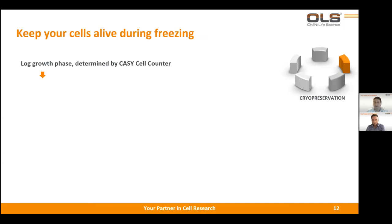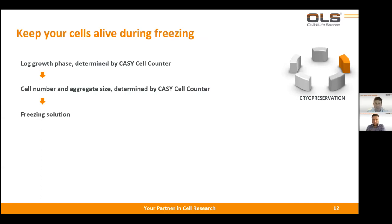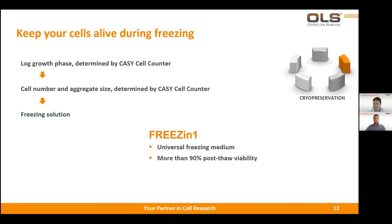It is also very important to know the cell number you want to freeze, which can also be checked with our KC cell counter. After several protocol steps, you add freezing solutions to your cells — for example, our Freeze in One universal freezing medium. Then you follow the protocol and freeze the cells, usually at minus 80 degrees. For long-term storage, you put the cells into liquid nitrogen.